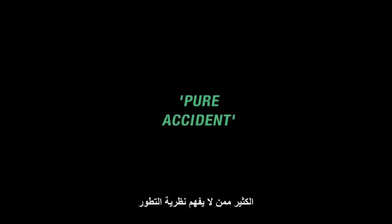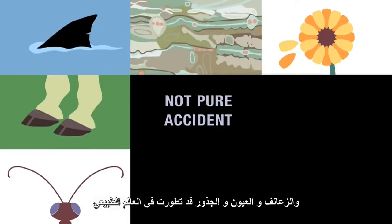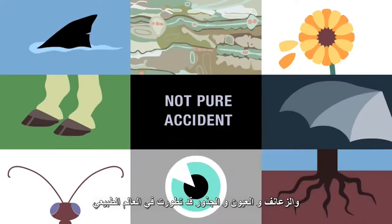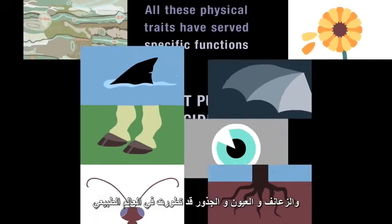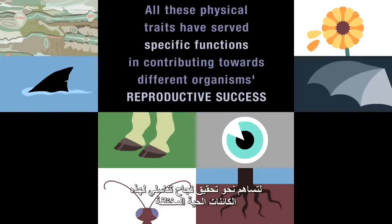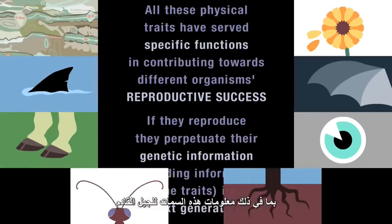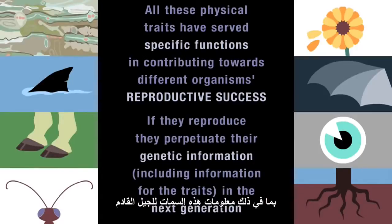Many who don't understand evolution try to discredit it by equating it with pure accident. But it's not pure accident that camouflage, hooves, petals, antennae, fins, wings, eyes, and roots have evolved in the natural world. All these physical traits have served specific functions in contributing towards different organisms' reproductive success. And clearly, if the organisms that exhibit these traits manage to reproduce, they perpetuate their genetic information, including the information for the traits, in the next generation.